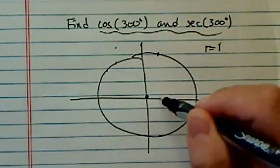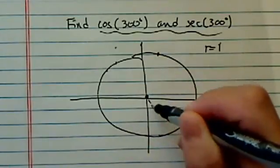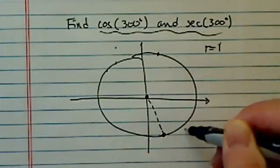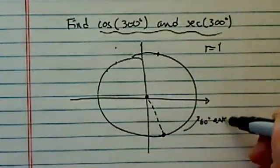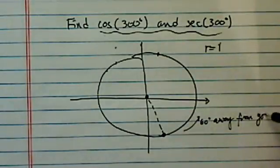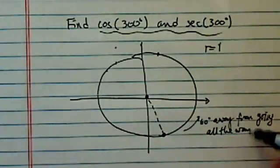300 degrees, going around a circle once is 360. So 300 means we're over here, we're 60 degrees away from going back, going all the way.